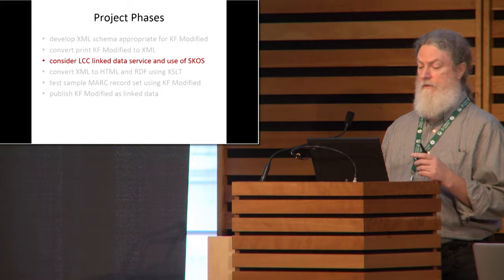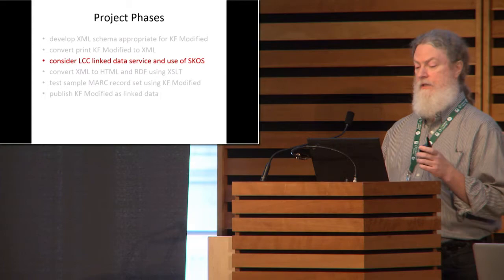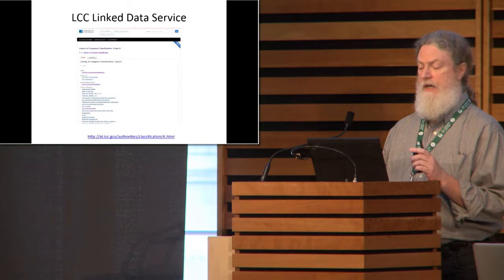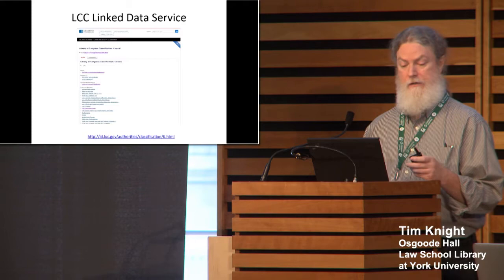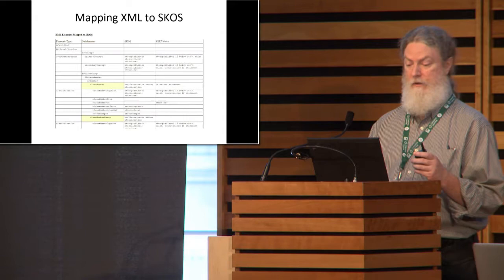The next step toward an expression of KF Modified in RDF XML was to review the work done at the Library of Congress classification linked data service. We discovered their linked data implementation was a little more complex than we would likely need. LC references its own authority databases through MADS and MODS, and we wanted to take advantage of those connections by mapping to their use of data elements through SKOS. So we focused on that, and started mapping our XML elements to SKOS.